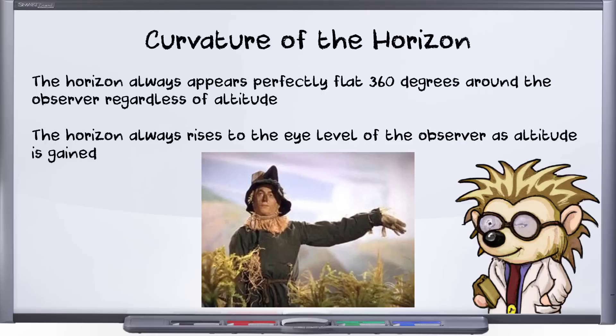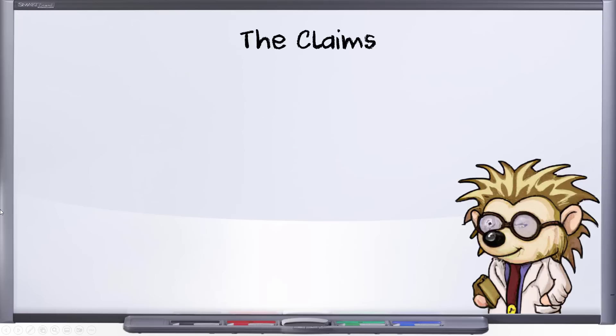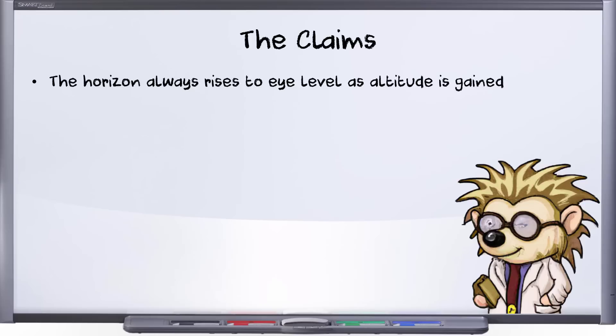In this series, I plan to investigate these two claims separately. After that, I will attempt to explain how these two separate claims are actually tied together. For simplicity's sake, I prefer to investigate these claims in the reverse order — first, the horizon always rises to eye level as altitude is gained.